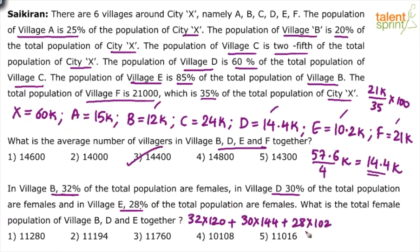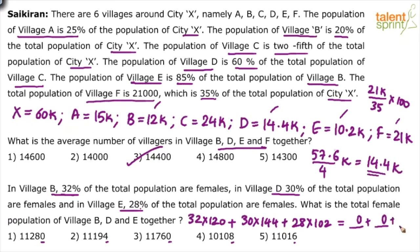Rather than doing the full calculation, a smart student uses the unit digit method. Most options have different unit digits: 0, 4, 8, 6. The first number 32 into 120 ends in 0, the second 30 into 144 also ends in 0, and the third 28 into 102 ends in 6 (8 times 2). So the sum ends in 6, and the answer is option 5: 11,016.